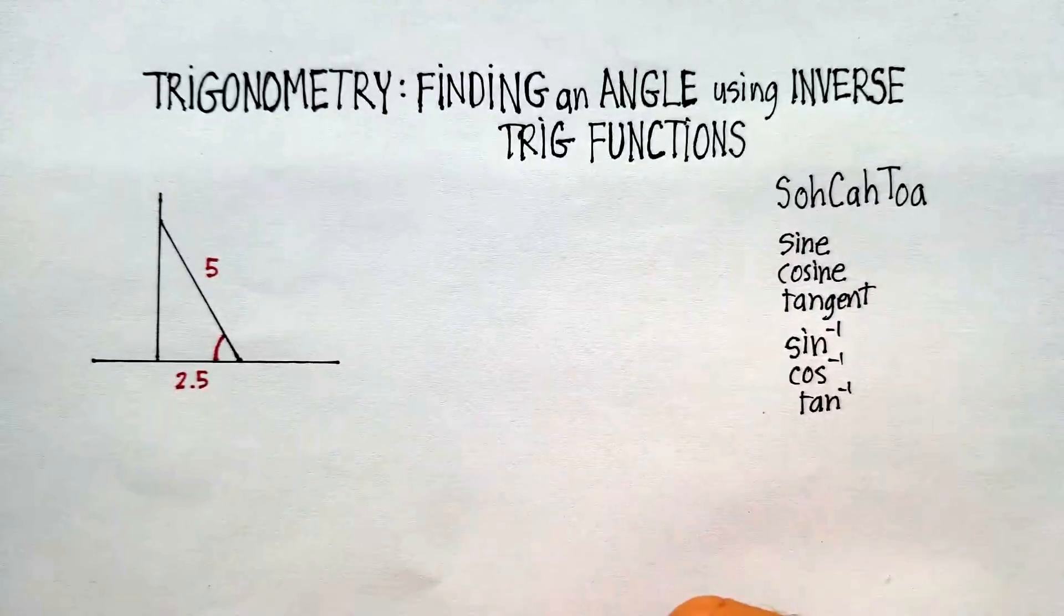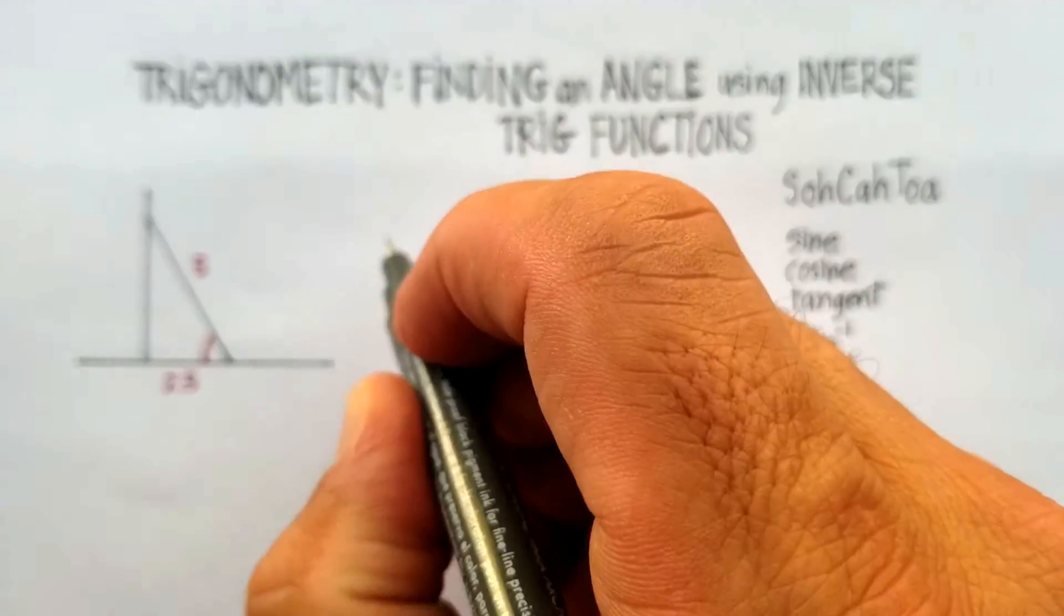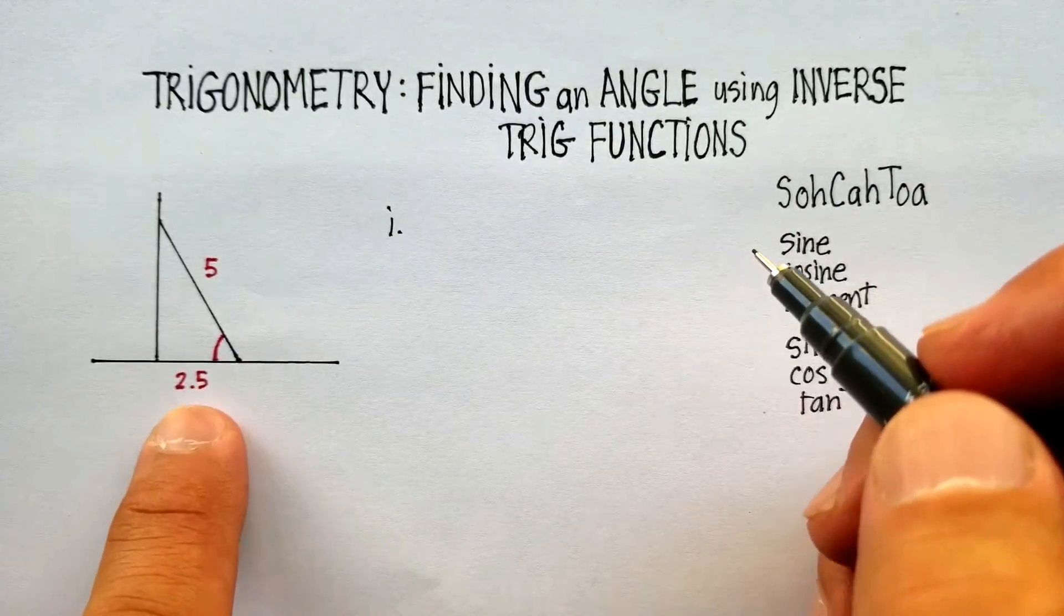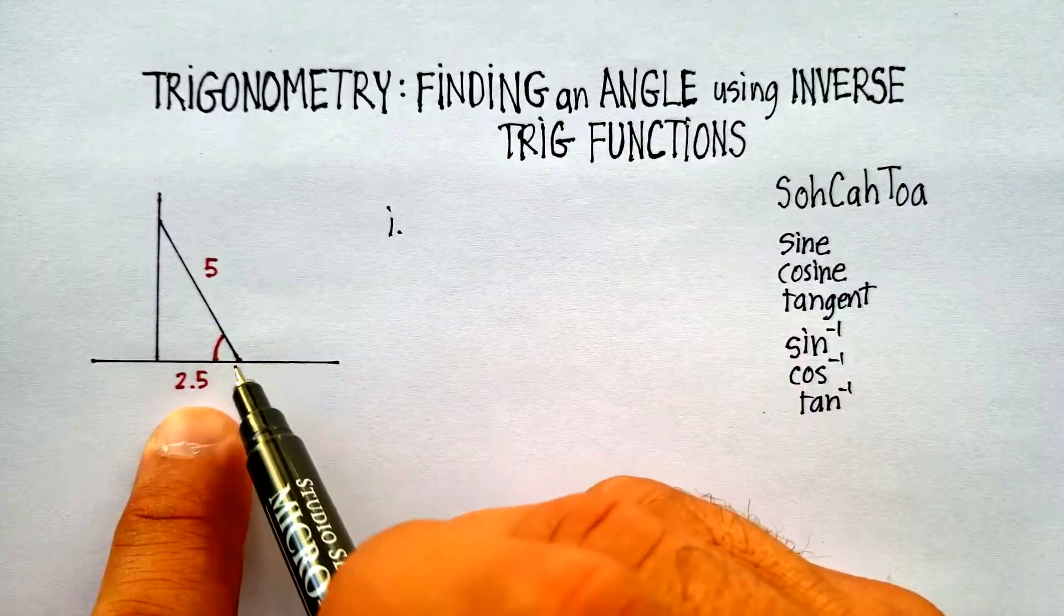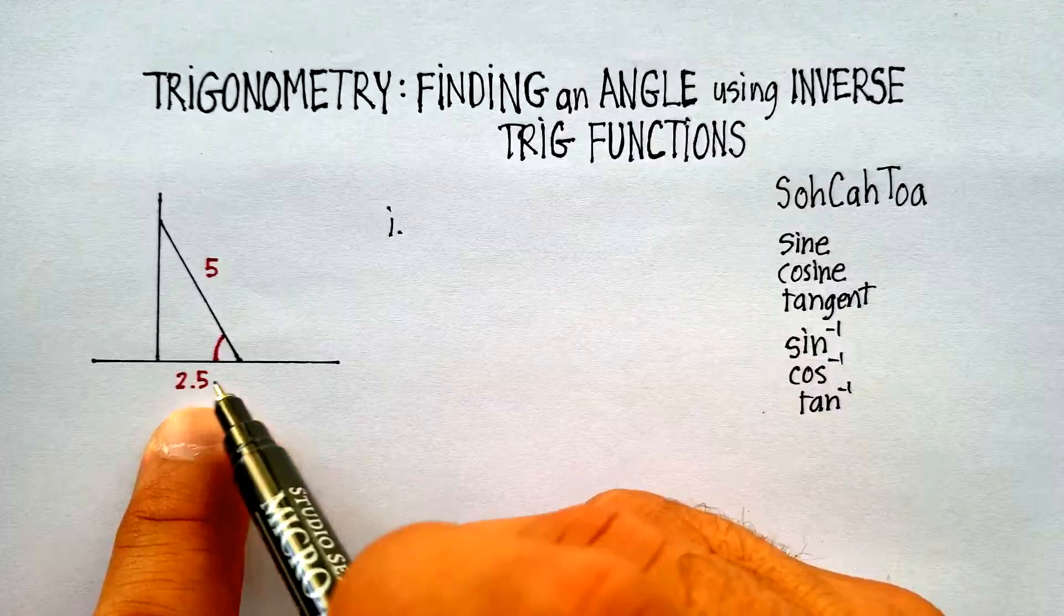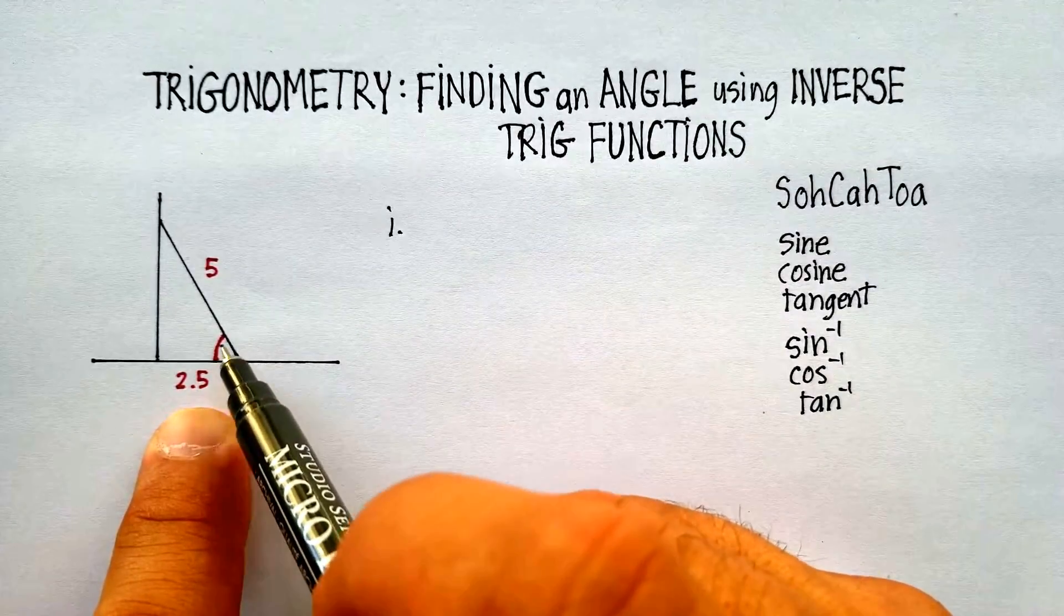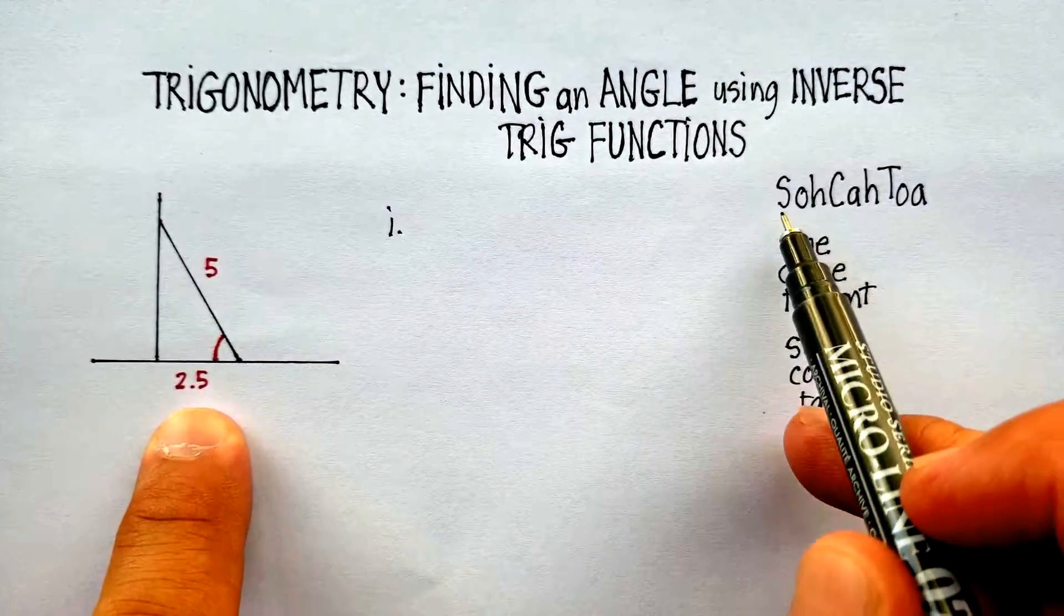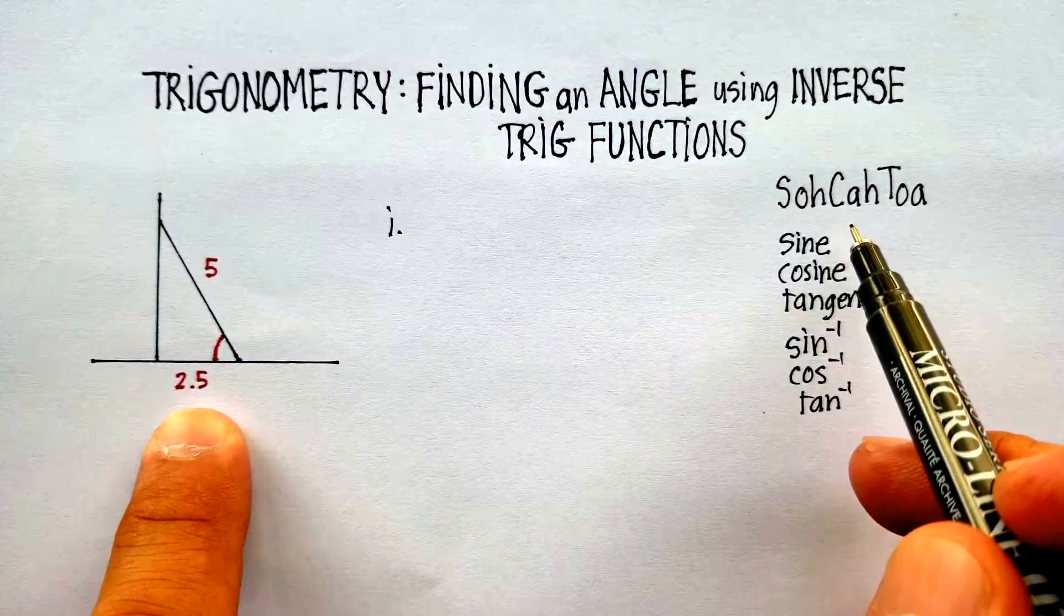Now, how would I go about studying this? Well, let's start with using a trig function. Now, a trig function would say, what do I know from this problem? Well, I know I have a 5-foot ladder, and I know that I am 2.5 feet away from the wall. And here's my angle I'm trying to find.